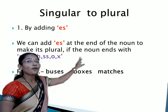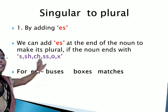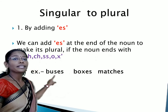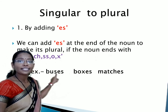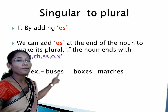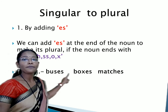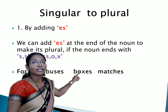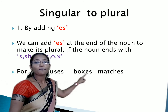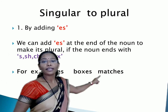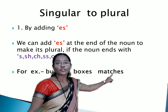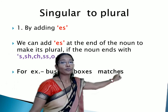If the noun ends with S, sh, ch, double S, O, or X — for example: bus — the ending letter is S, so we should add ES to make its plural, so it will become buses. In the same way, box — the last letter of box is X, so we can add ES and make it boxes. In the same way, match — the last letters are CH, so we can add ES to make its plural — matches.